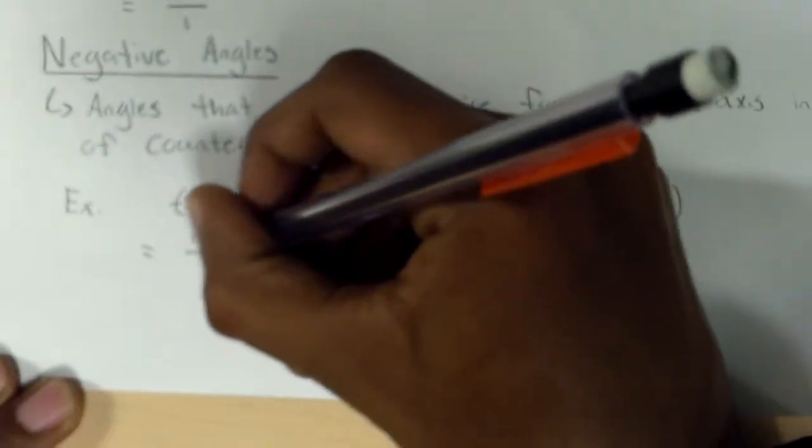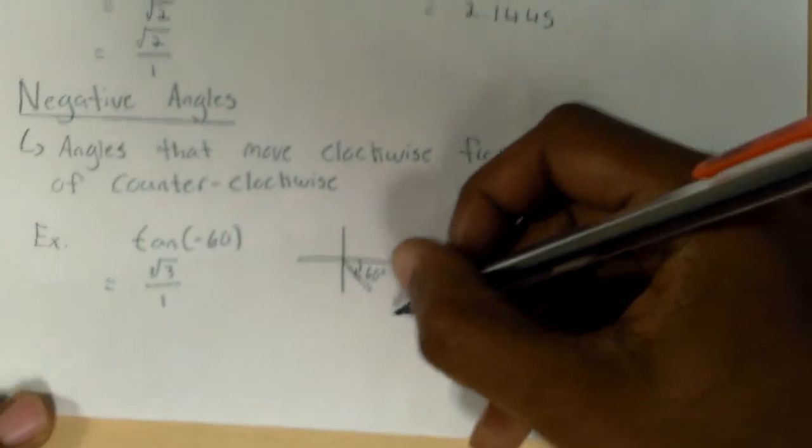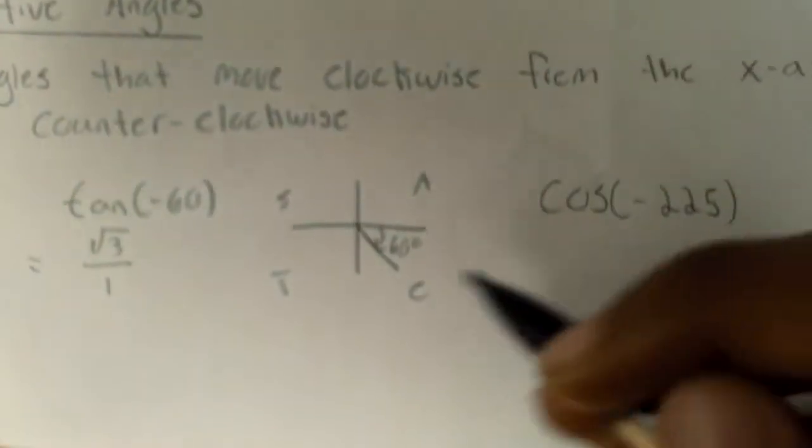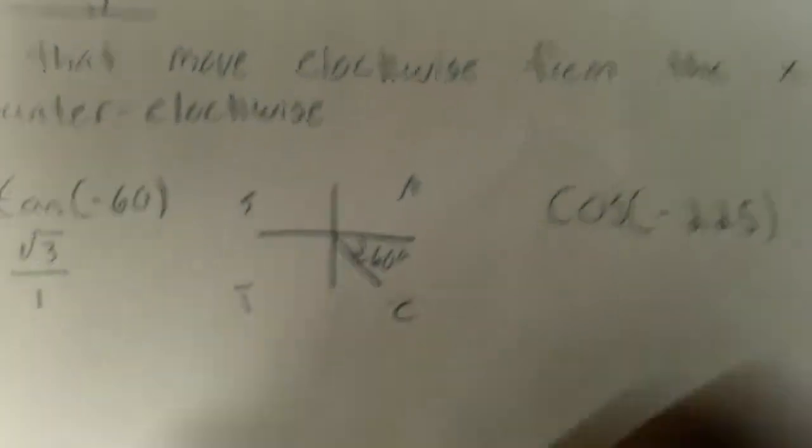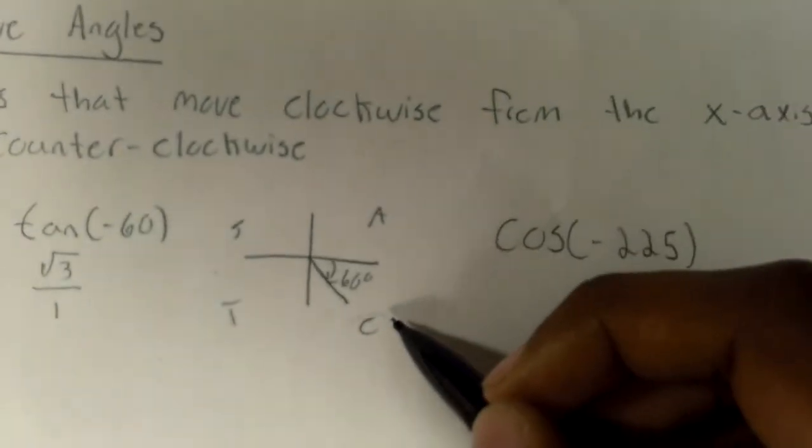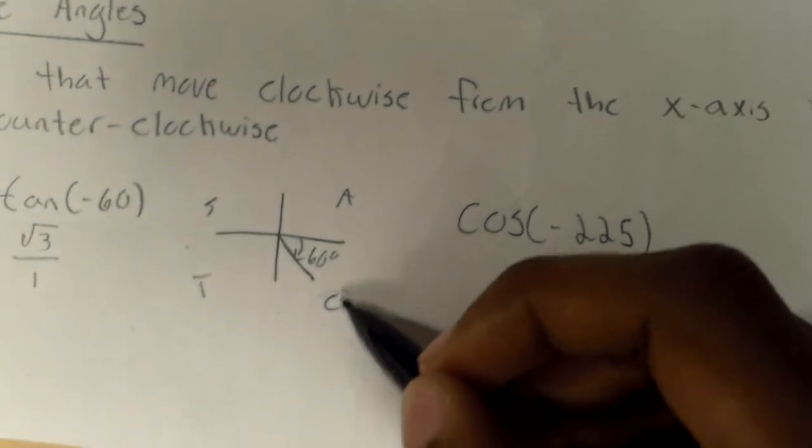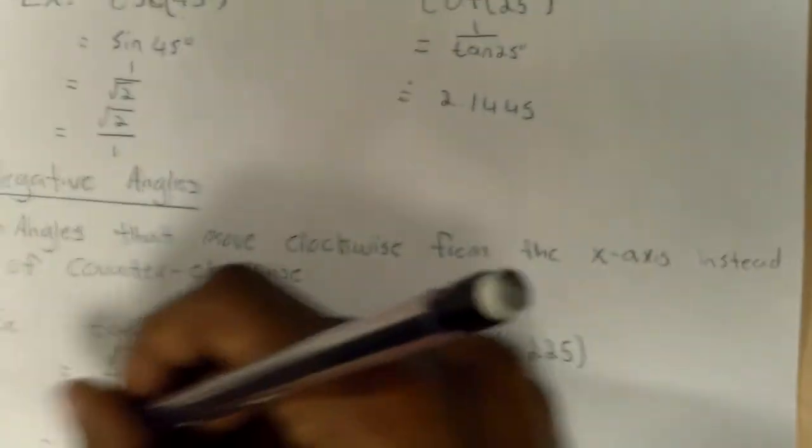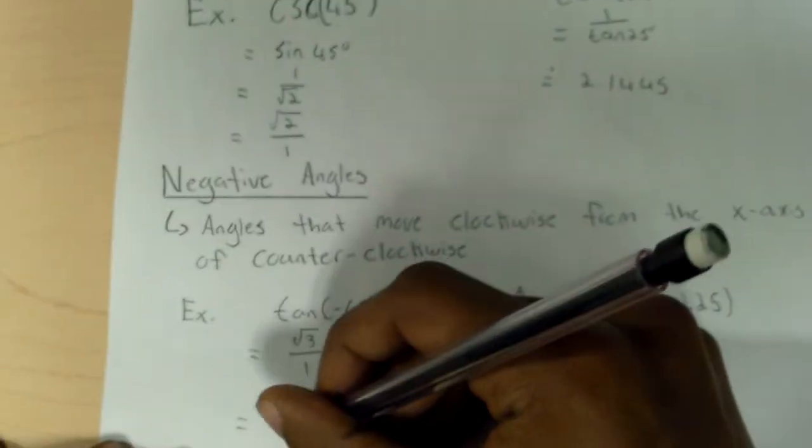And we see that it's in the cosine quadrant. So it would be negative. So negative square root of 3 over 1.